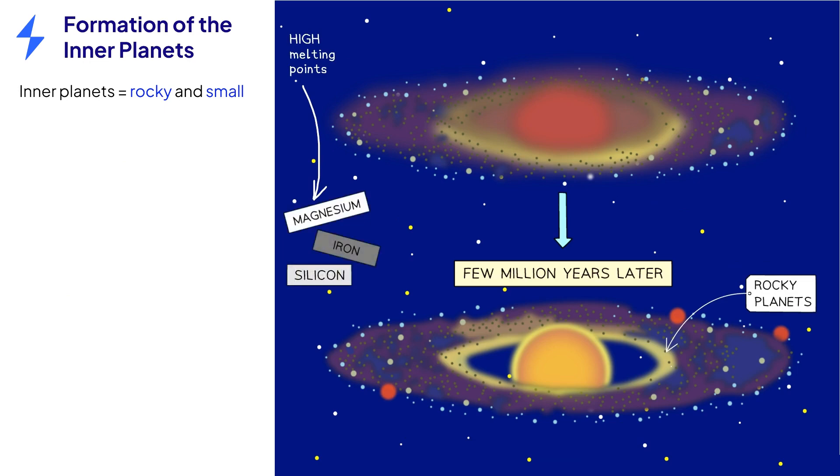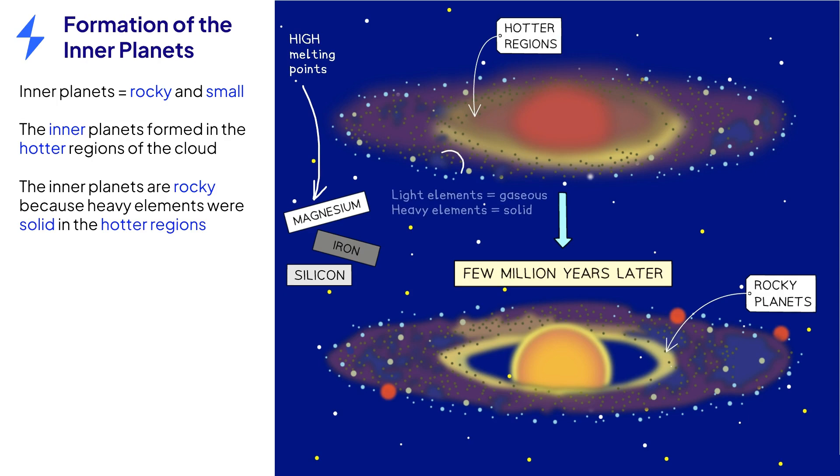The inner planets are small and made from materials with high melting points such as rocks and metals. This is because the temperature was much higher in the regions closer to the Sun. In these hotter regions, heavier elements would have been solid, whereas lighter elements would have been gaseous.